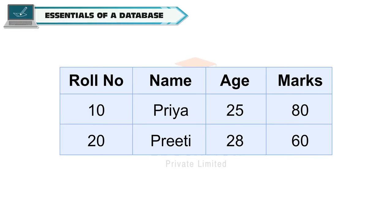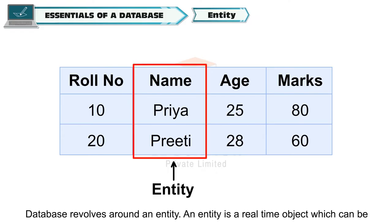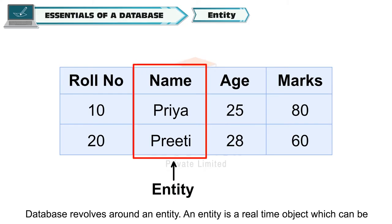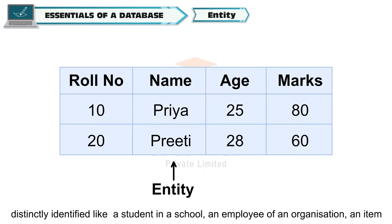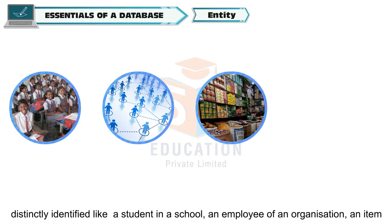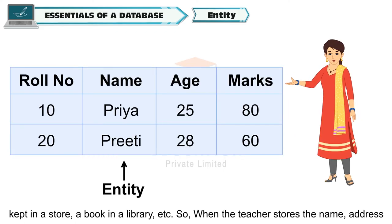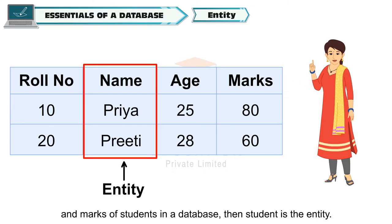Essentials of a Database: Every database has some components that are essential parts of a database. These are Entity — a database revolves around an entity. An entity is a real-time object which can be distinctly identified, like a student in a school, an employee of an organization, an item kept in a store, a book in a library, etc. So when the teacher stores the name, address and marks of students in a database, then student is the entity.